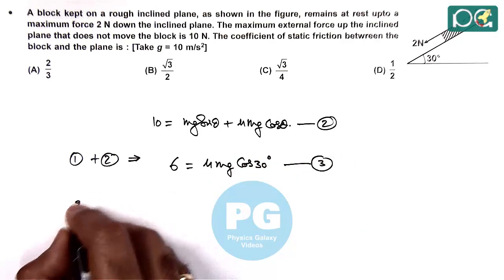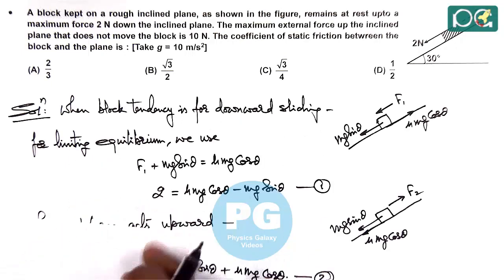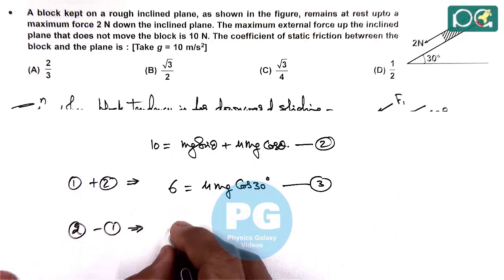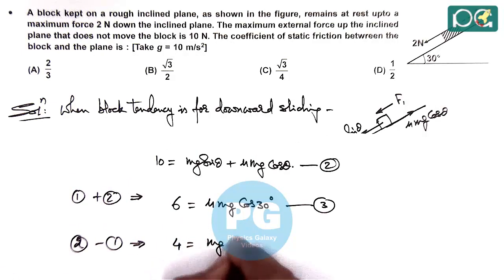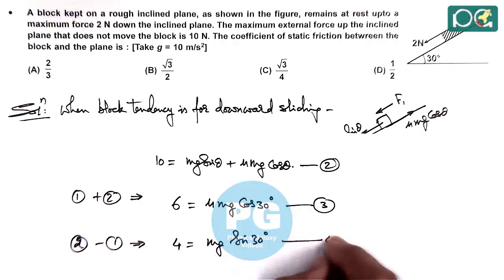Subtracting equation 1 from equation 2 gives 10 - 2 = 8, which divided by 2 gives 4 = Mg sin 30°. This is equation 4.